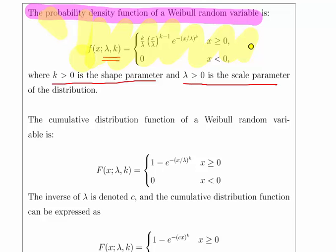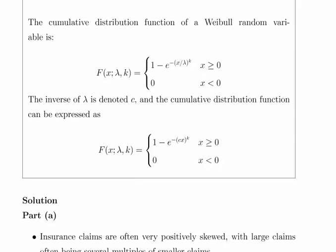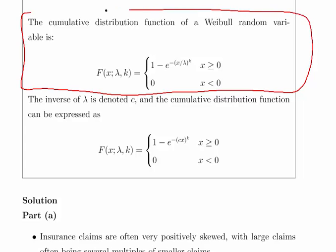This is the conventional way of specifying the Weibull distribution, but just for the sake of simplicity, there is a re-parameterization that takes place to slightly adjust it. This is the cumulative distribution function. Now in this case, we are looking in terms of C and K, parameterized as C and K. So what you can do is define C as the inverse of lambda, and that cumulative distribution function could be expressed as follows.